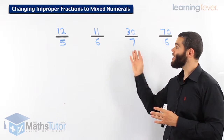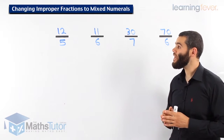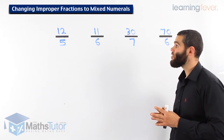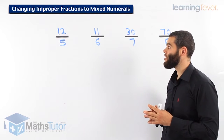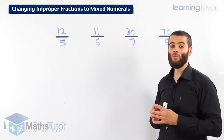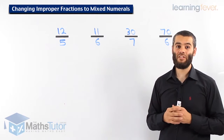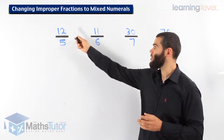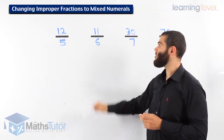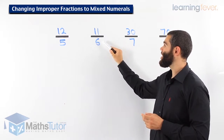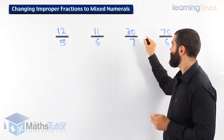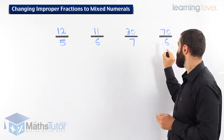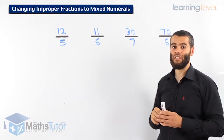If we look here, we have all these improper fractions where the numerator is larger than the denominator: 12 is larger than 5, 11 is larger than 6, 30 is larger than 7, 70 is larger than 6.